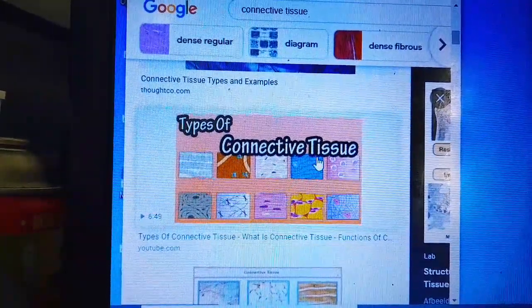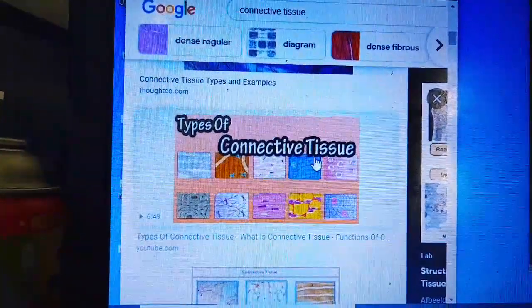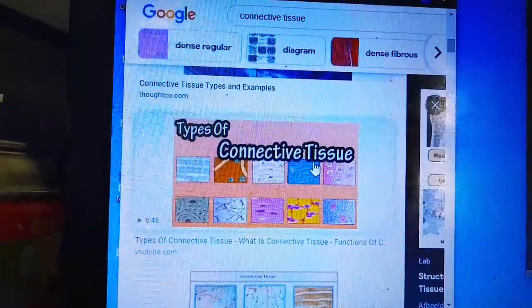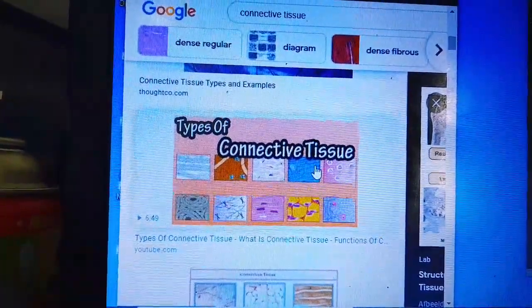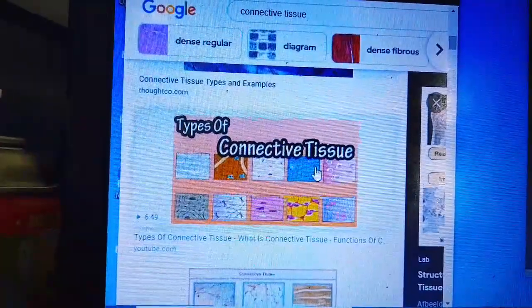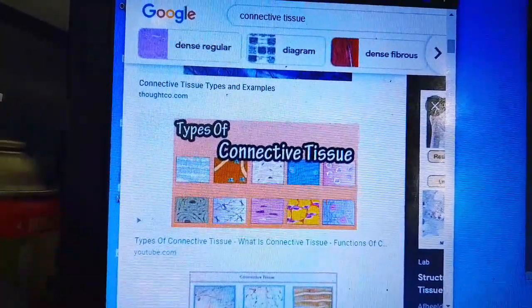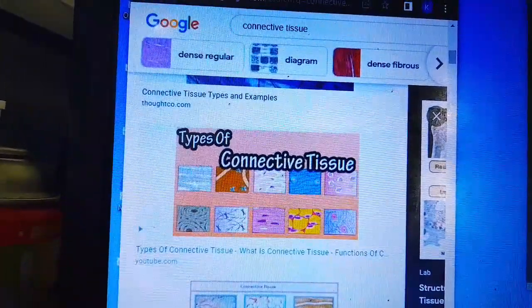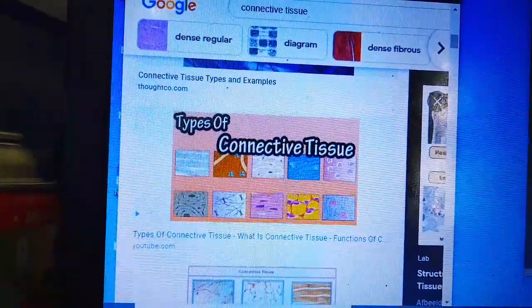Cells of adipose tissue store fat. It is in the cells that fat is stored in the form of fat globules. Due to the storage of fat, the adipose tissue acts as an insulator.